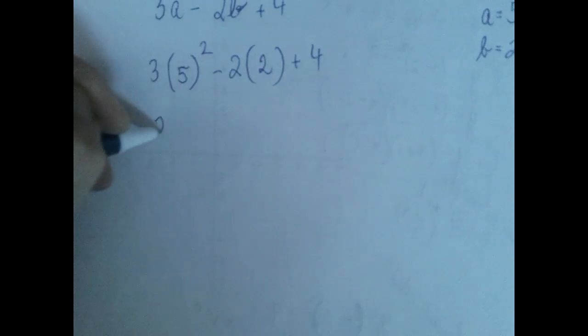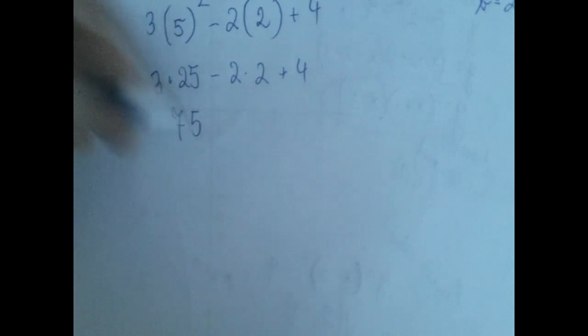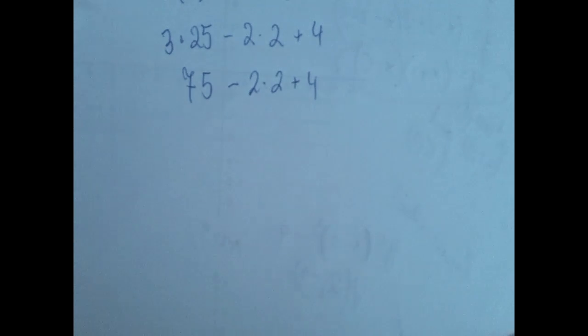Exponentiations first. 5 squared is 25. Now multiplications left to right. 3 times 25 is 75. 2 times 2 is 4.